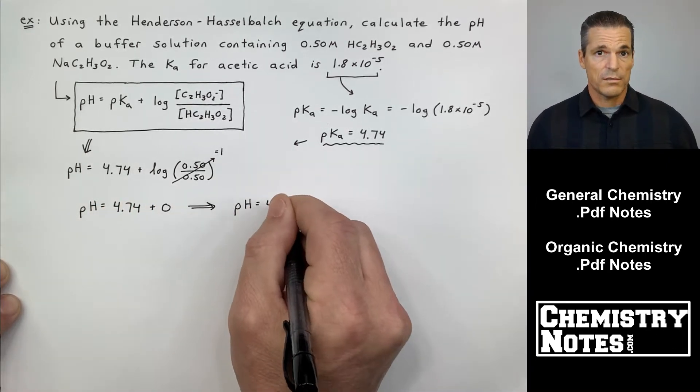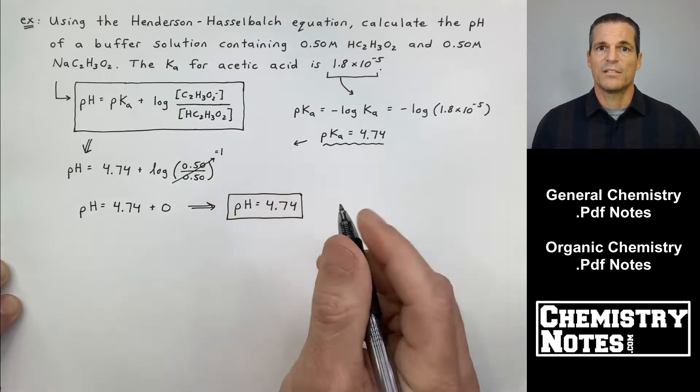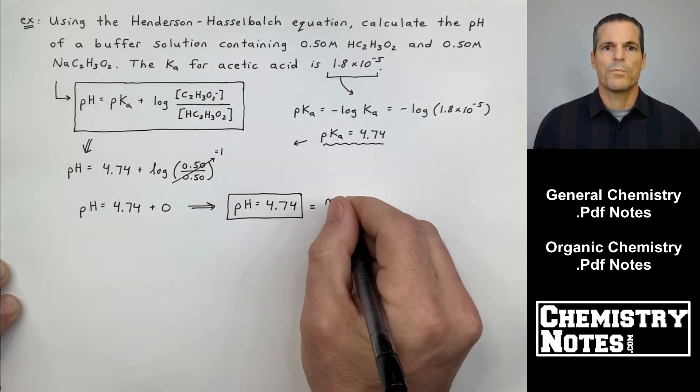So pH is equal to pKa plus the log of acetate concentration all over acetic acid concentration. pH is 4.74 plus the log of 1. Well, the log of 1, try it on your calculator. Hit log of 1. It's 0. So pH is 4.74.